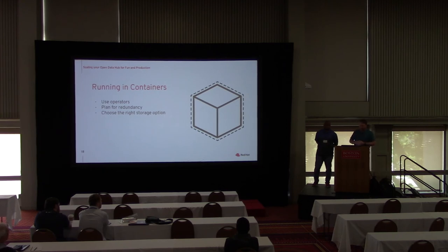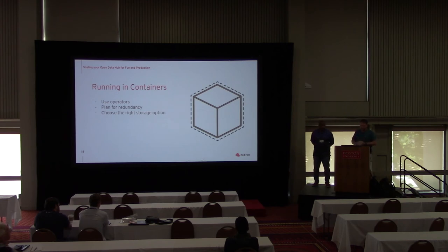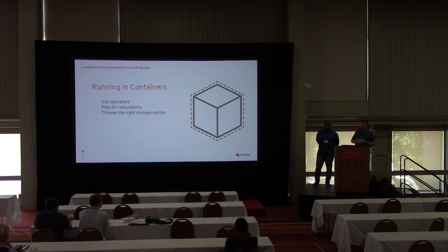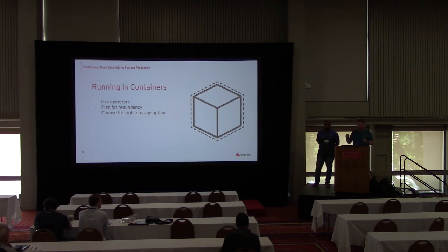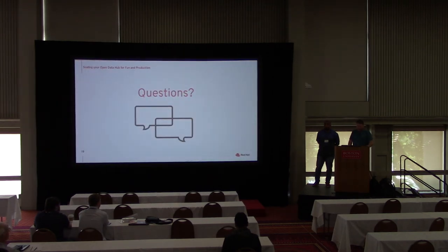Finally, leverage available storage options. OpenShift gives you the ability to use host path mounts, so if you have something that requires really fast storage, you can use local NVMe storage right locally in your OpenShift pods. Or you can use something like Ceph, which is container-native storage that works really well. Just tailor your needs to the kind of storage you have available to you. That's the end of what I have — I can take questions if you have them.